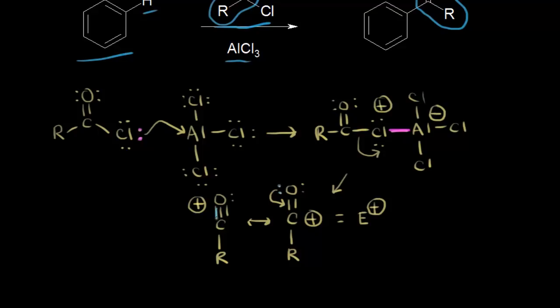This resonance stabilization of the acyl cation is one key difference between acylation and alkylation. Because the cation in acylation is resonance stabilized, there is no rearrangement — unlike the alkylation reaction in the previous video, where a carbocation could rearrange to a more stable form, making it difficult to control products. With acylation, there is no rearrangement due to this resonance stabilization. We also form a complex where aluminum is bonded to four chlorines, with three lone pairs on the chlorine, giving aluminum a negative 1 formal charge. The catalyst has generated our electrophile.